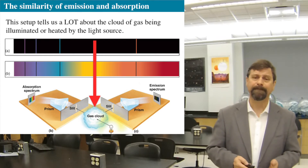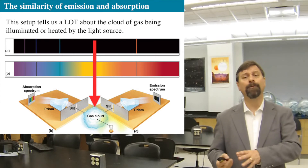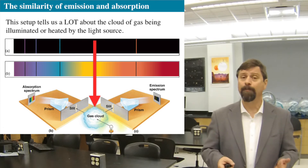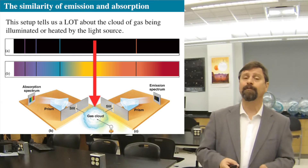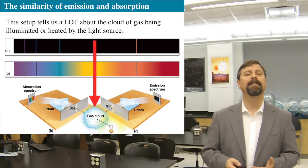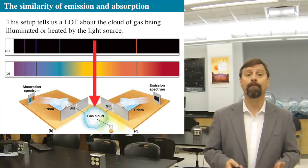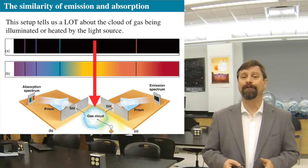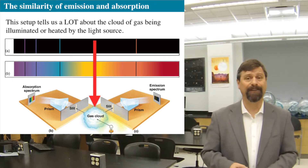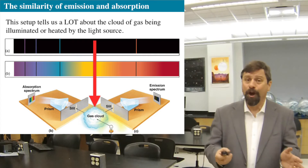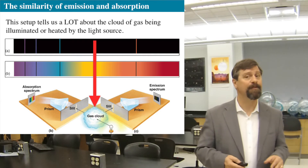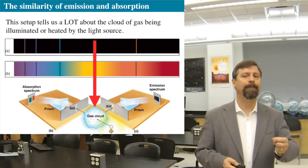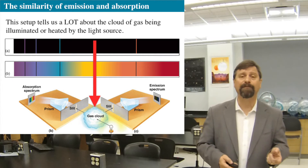Gustav Kirchhoff did all this work in spectroscopy well before the advent of quantum mechanics and the Bohr model of the atom. He didn't know about any of this, so he derived these laws empirically, and these observations then had to be accounted for with the advent of quantum mechanics — which they were.